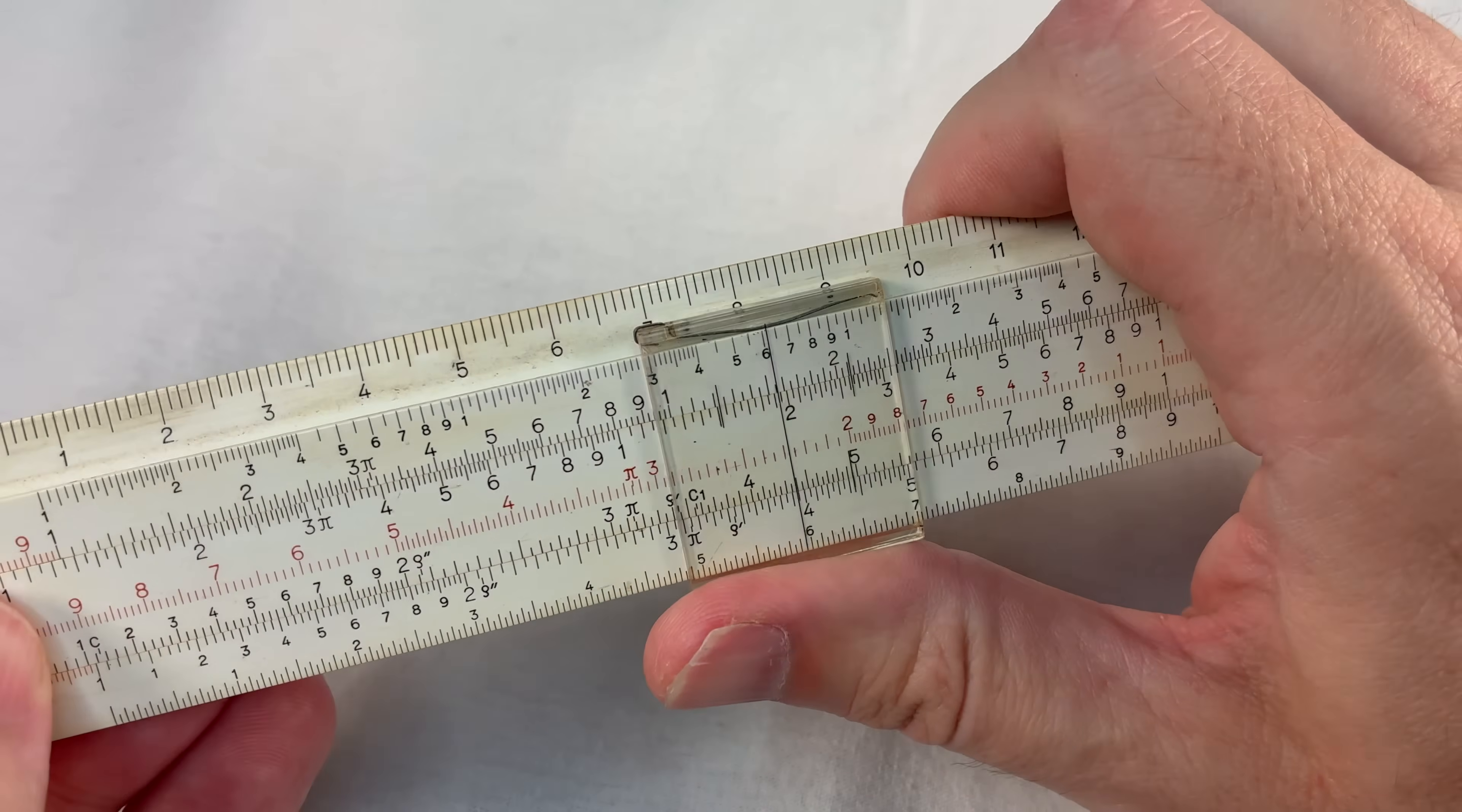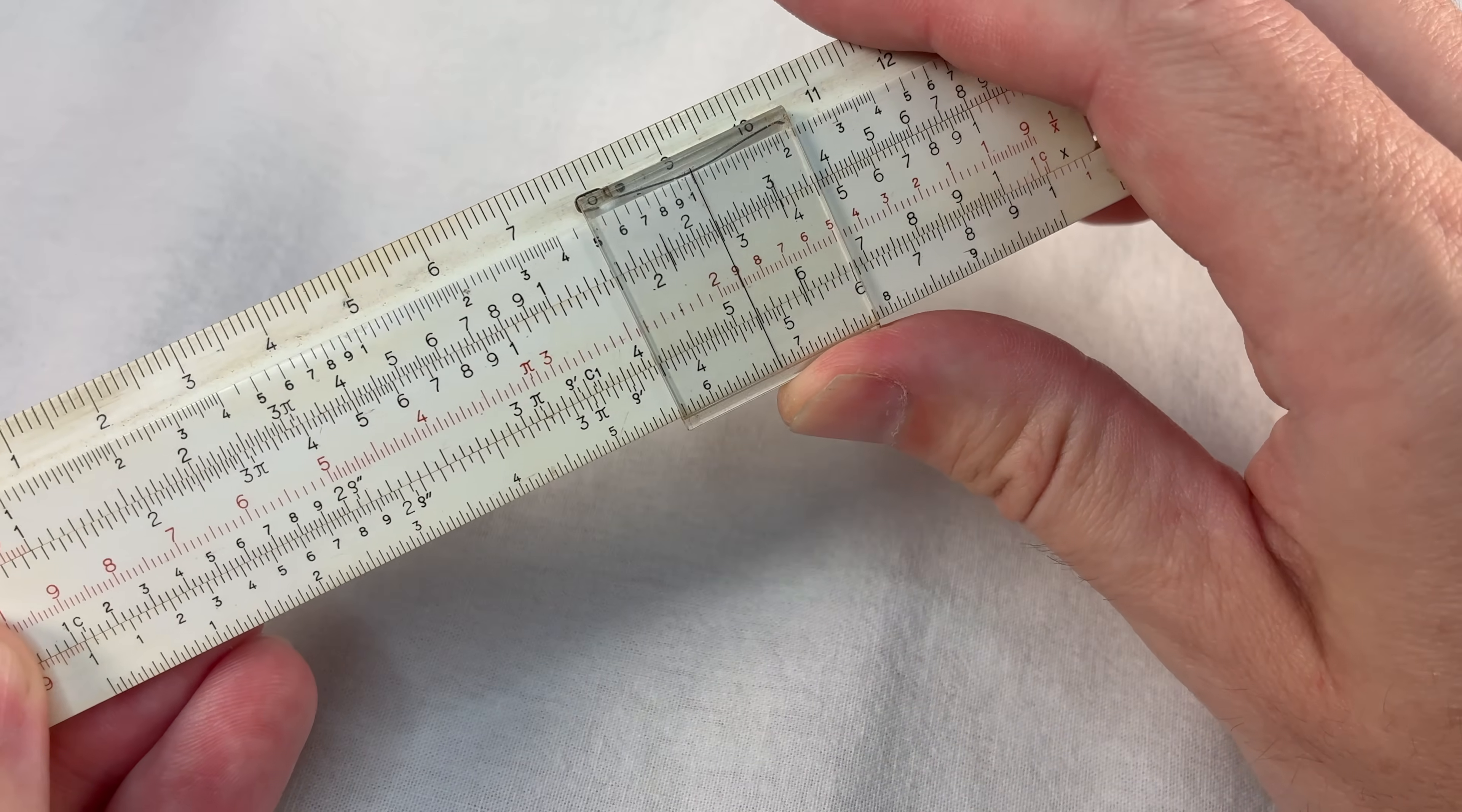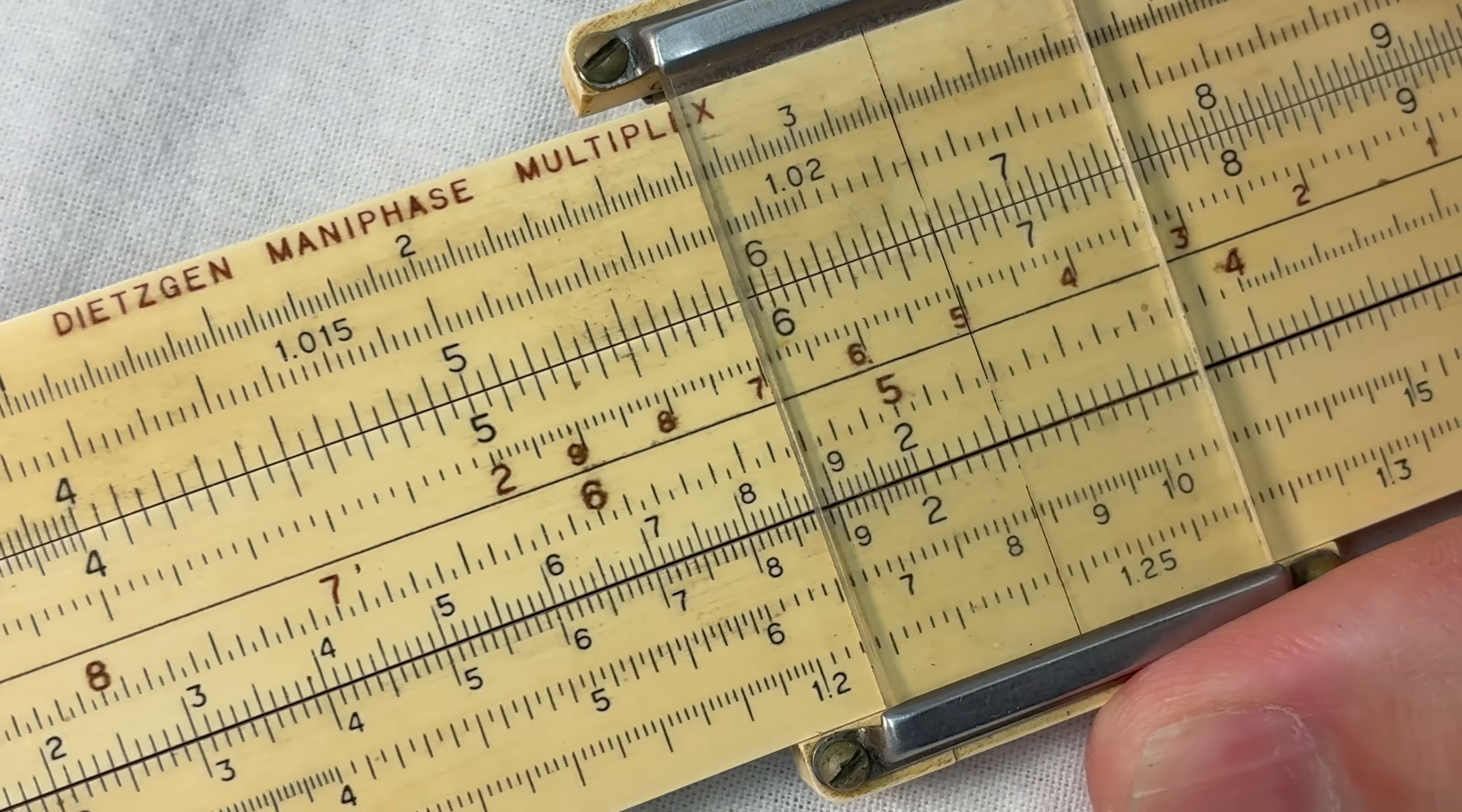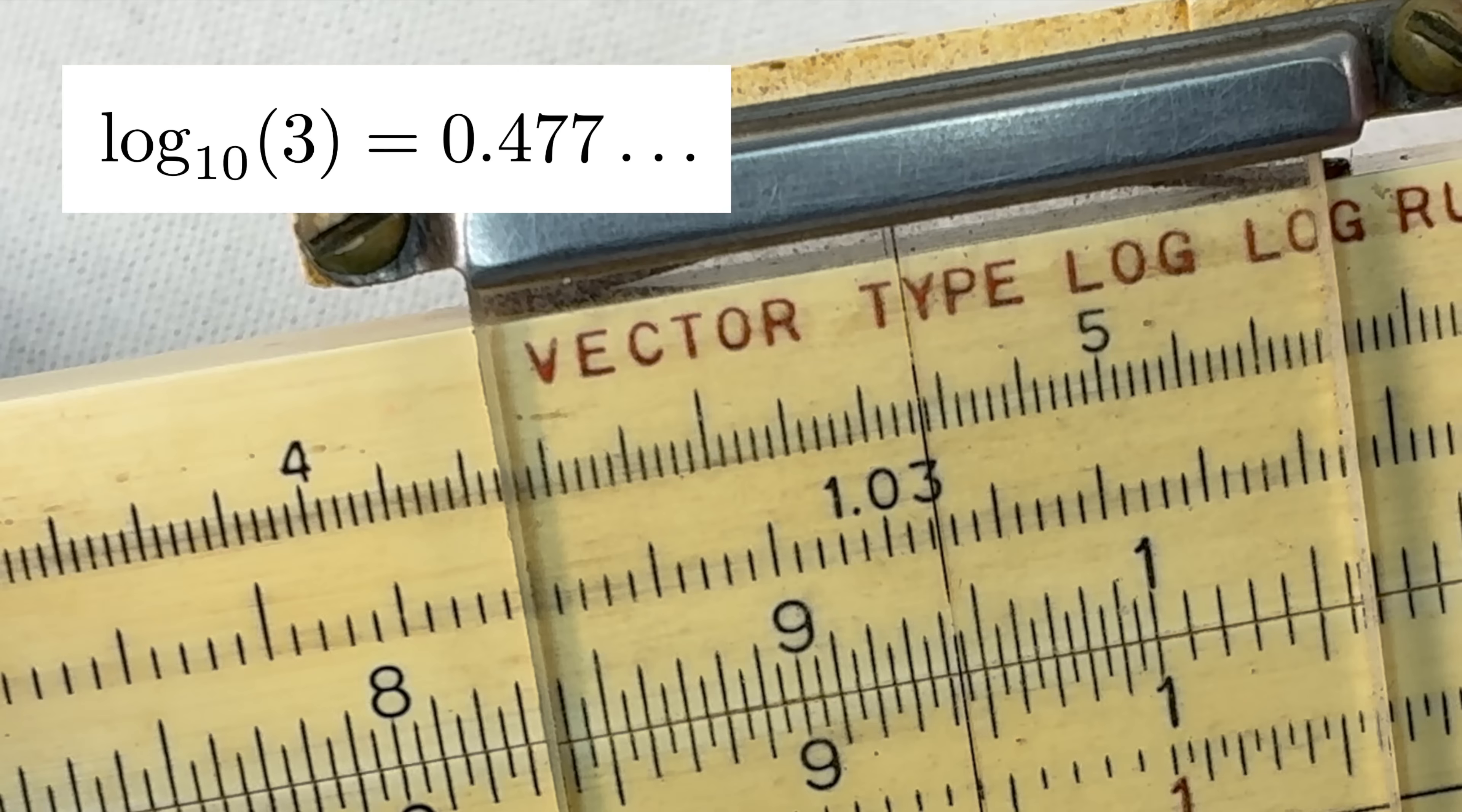A real slide rule has this thing called the cursor. It's just a straight line that helps you line stuff up precisely. You really need the cursor if you're using lots of scales. Like here's my Deitschin Mani Phase Multiplex Vector Type Log Log Rule. What if I want to line up a number on the D scale with some number on the L scale? It makes a nice line. So like the three on the D scale makes something like 4.7 on the L scale. This is actually how you would find the base 10 log of three.